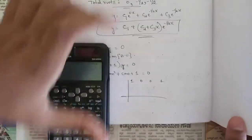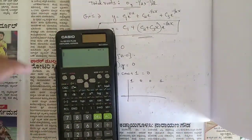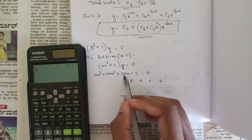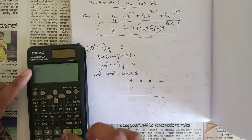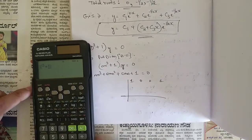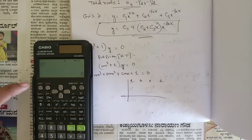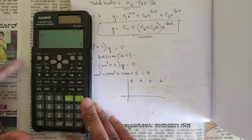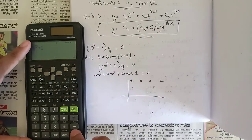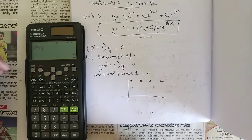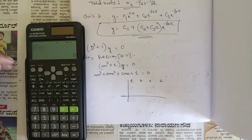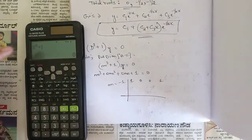We need to find the first root of this equation using the calculator. Enter x³ + 1. Press calc. Put x = 0: we get 1. Put x = 1: we get 2. Put x = −1: we get 0. So the first root is m = −1.